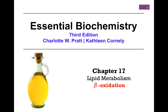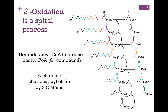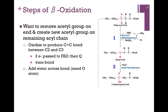In our next lesson on lipid metabolism in Chapter 17, we want to look at beta-oxidation. Beta-oxidation is a spiral process. We're going to start with an acyl-CoA molecule, and each round of beta-oxidation is going to shorten that chain by two carbon atoms, producing one acetyl-CoA molecule, until we finally get to our last round where we generate two molecules of acetyl-CoA. Let's see how that process works.